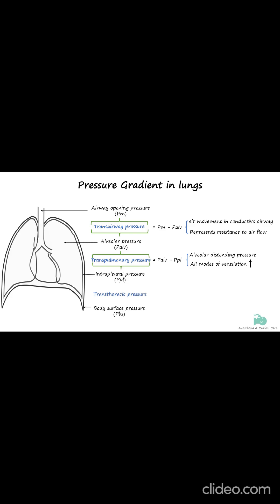The transthoracic pressure gradient is the difference between the pressure in the pleural space and the pressure at the body surface, and represents the total pressure required to expand or contract the lungs and chest wall. Together, the transairway pressure and transthoracic pressure are called transrespiratory pressure.